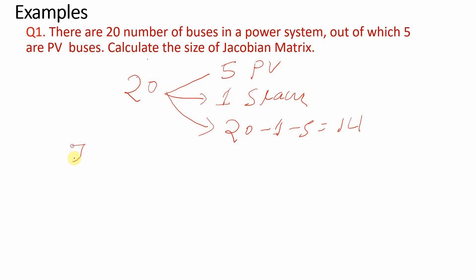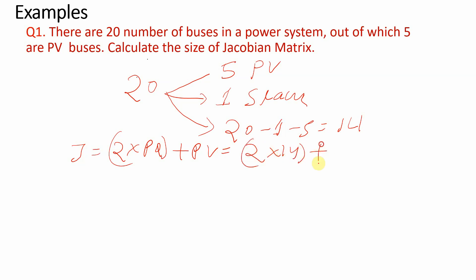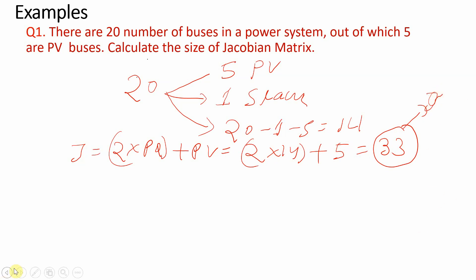The formula for the Jacobian matrix size is: 2 × (PQ buses) + (PV buses). In this case: 2 × 14 + 5 = 33. So the size of the Jacobian matrix is 33.